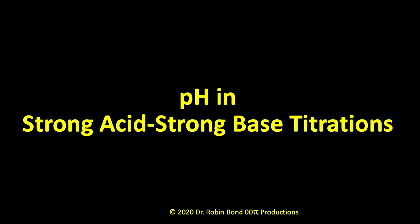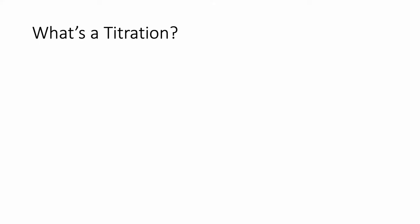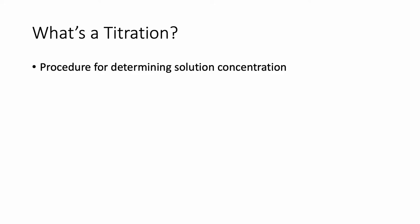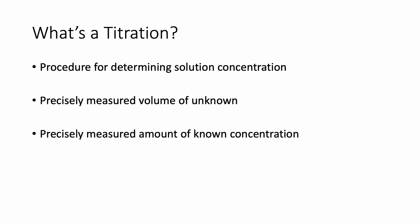Hey everyone, today we're going to talk about how to calculate the pH when you're doing a strong acid, strong base titration. First, a real quick review of what a titration is. Basically, it is a method for determining what the concentration of a solution is, by comparing a measured volume of unknown to a measured amount of known concentration. If you measure both of those volumes very precisely, you can determine the concentration of your unknown solution very precisely.